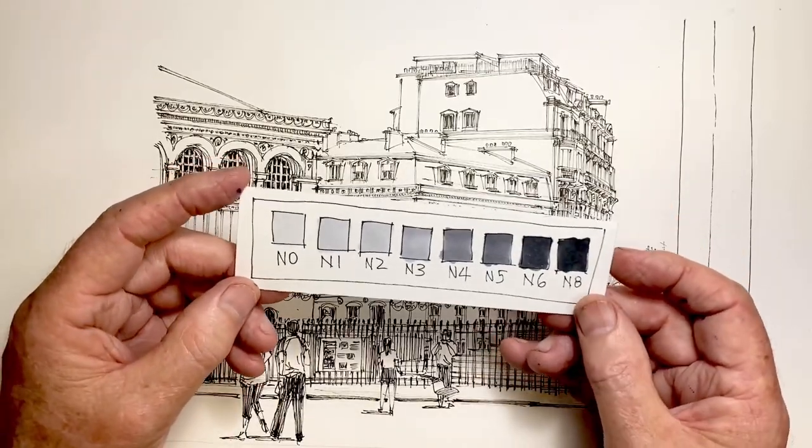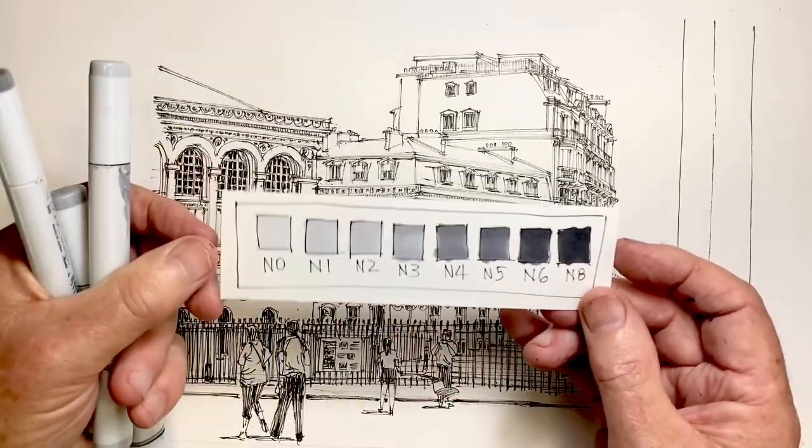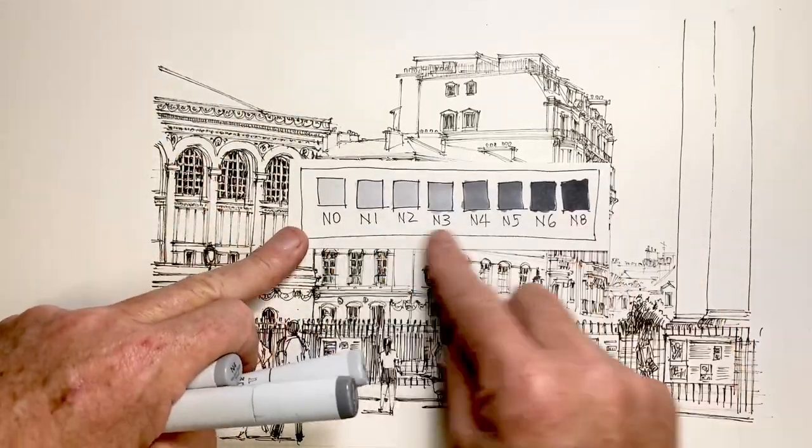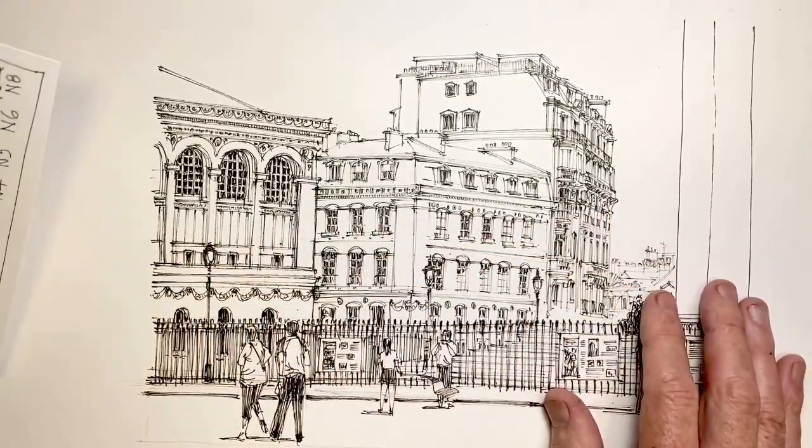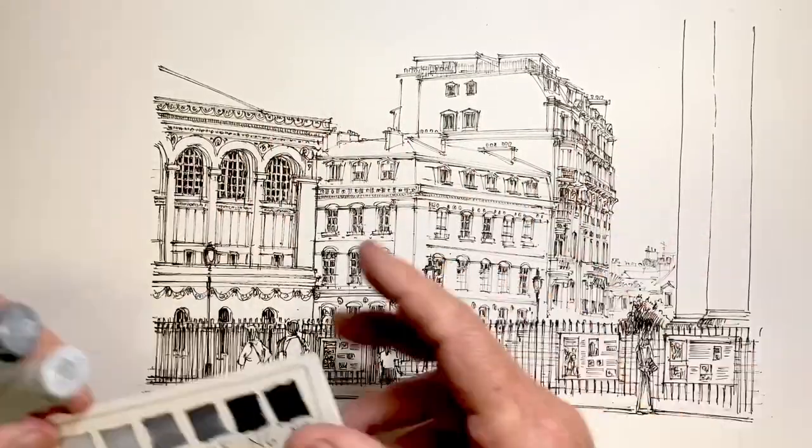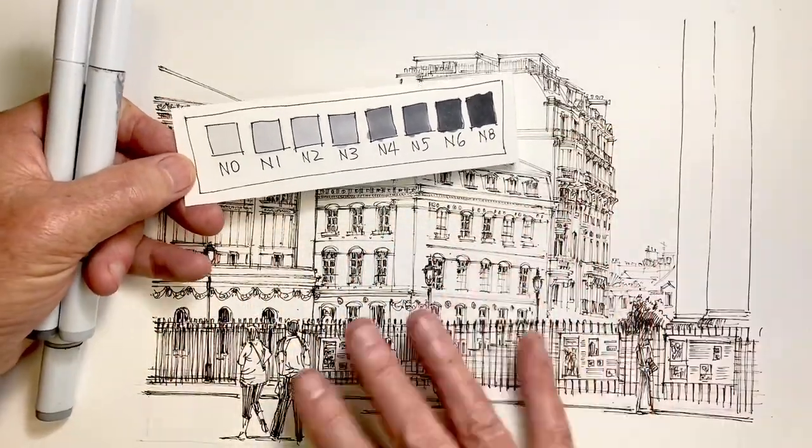So can I suggest that for whatever brand of markers you use, and however many you have, you prepare a color chart and have it handy, so that the next time you've completed a line drawing, you're ready to use it to help you apply the tone in the most effective way.